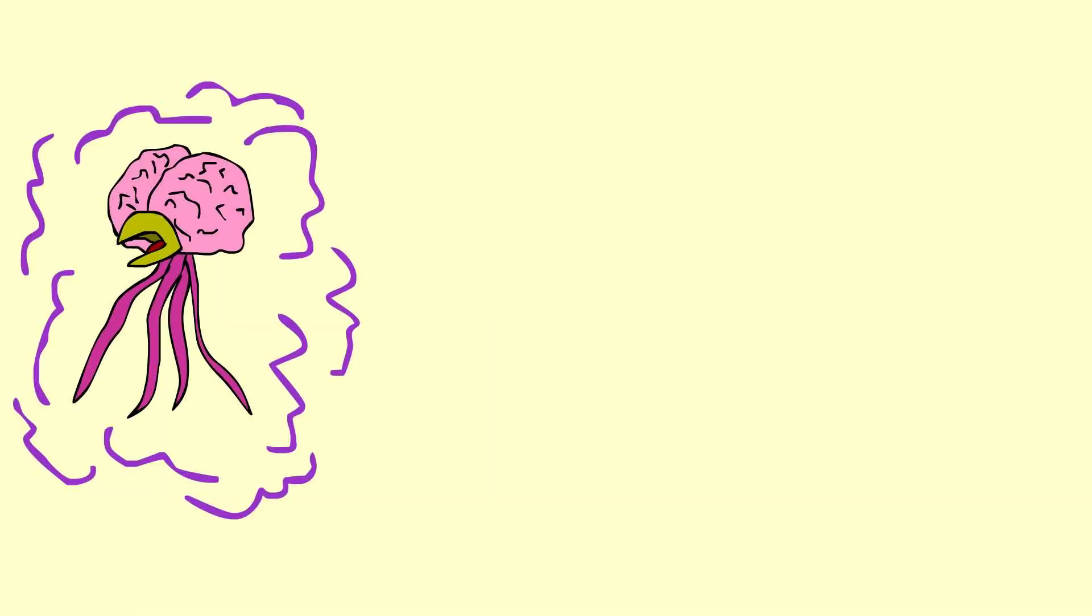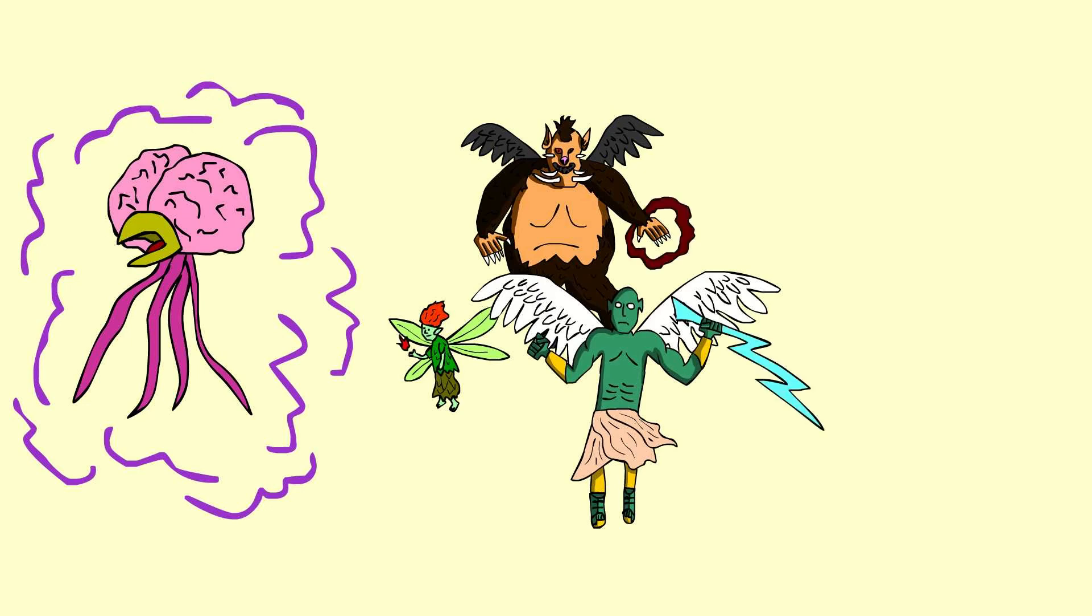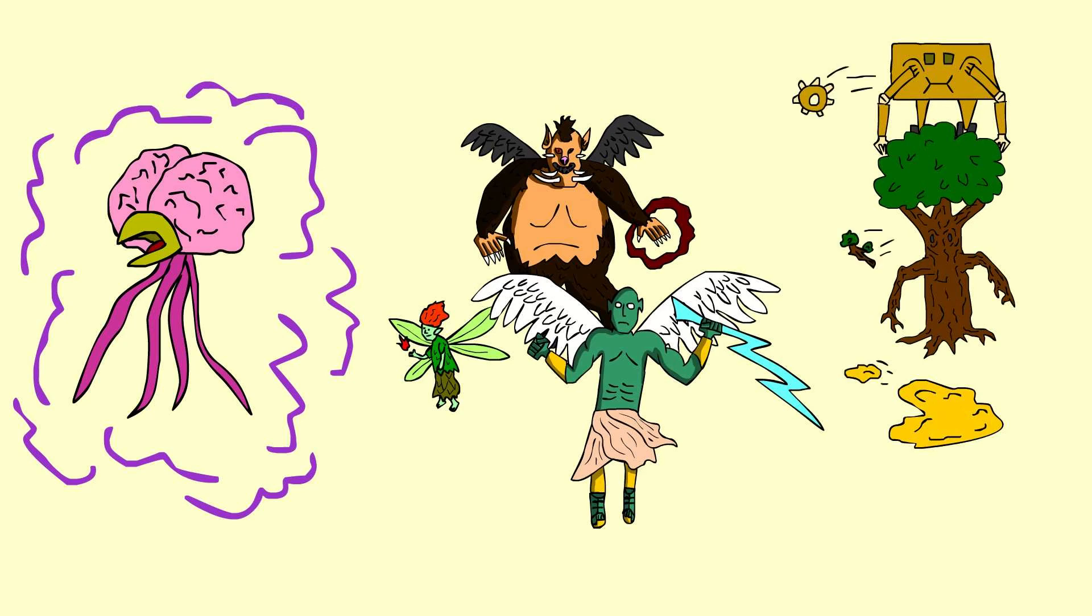Aberrations could have mind bending abilities or auras around them. Fiends, fey, and celestials can cast spells and throw elemental powers around. Constructs, plants, and oozes can throw bits of themselves around, possibly creating a new version of themselves. Your imagination is the limit, so go out and use it.